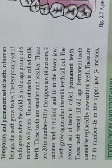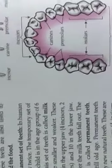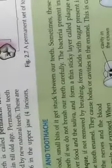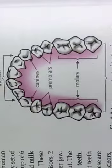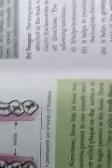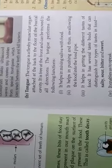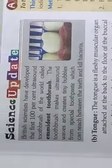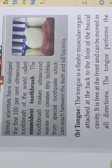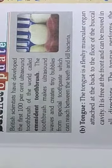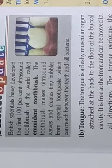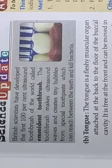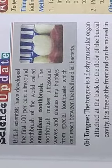Second is the tongue. The tongue is a fleshy muscular organ, attached at the back to the floor of the buccal cavity. It is free in the front, and can be moved in all directions. It performs to mix saliva with food. It helps in pushing, and thus, swallowing of food into the food pipe.